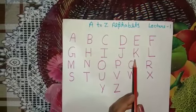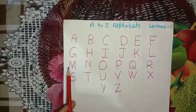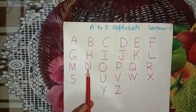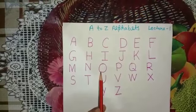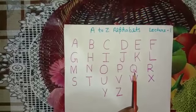J says Joker, K says Kite, L says Lion, M says Mango, N says Nest, O says Orange, P says Parrot, Q says Queen.